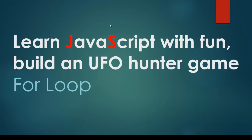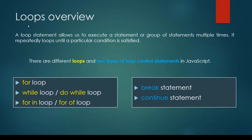In this lecture we are going to talk about JavaScript related loops such as for loop, while loop, and do while loop. First of all, what is a loop? A loop statement allows us to execute a statement or group of statements multiple times. It repeatedly loops until a particular condition is satisfied.